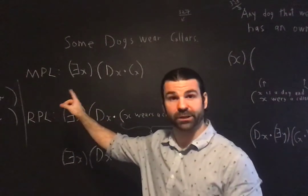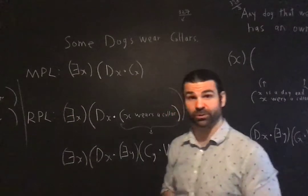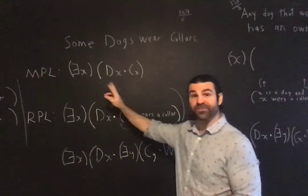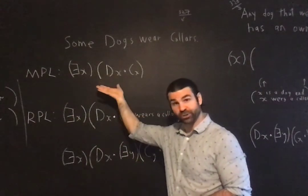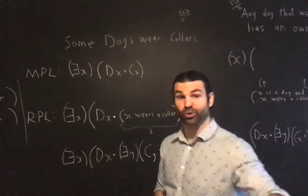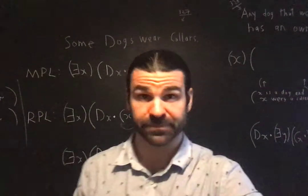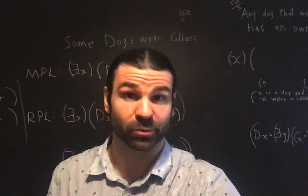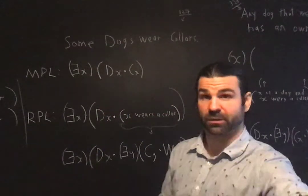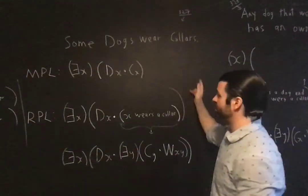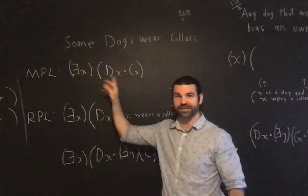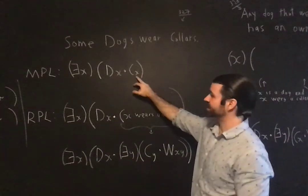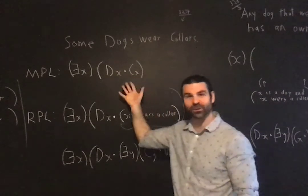MPL, monadic predicate logic. As Clank runs through on page 327, this is the translation you would have to give with only the resources of monadic predicate logic. Some dogs wear collars, it's an existential. DX, X is a dog. CX, X wears a collar.